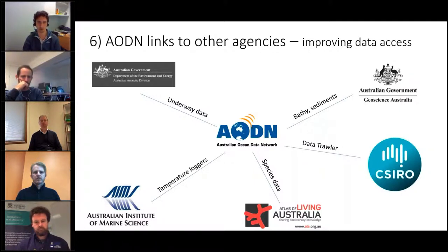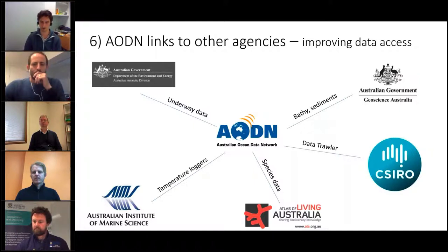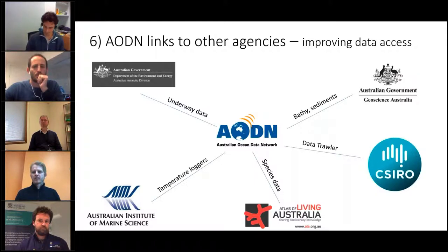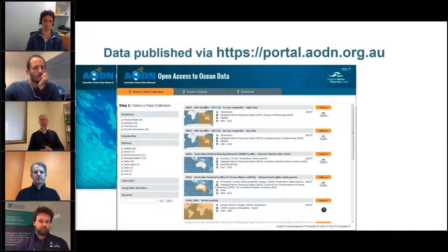We focused on five organisations: the Australian Institute of Marine Science, the Atlas of Living Australia, CSIRO, and Geoscience Australia. For each of them, we decided with our partners to focus on one or two datasets that they wanted to share with us. The end goal was to publish data on the AODN portal, which is the main window where we display data collected by IMOS and by other partners.